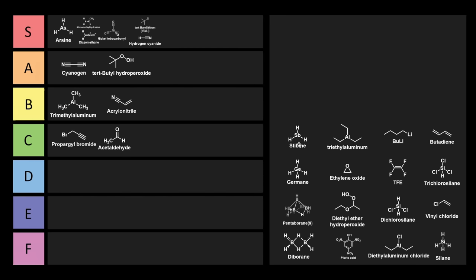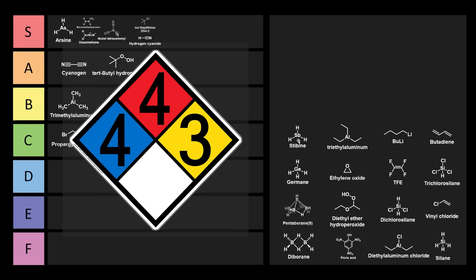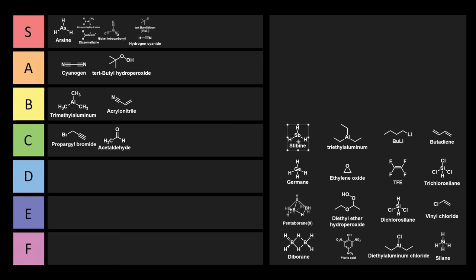This odd-looking chemical is called stibine. It's a derivative of antimony, and since it's a pnictogen, which is the same row that nitrogen, phosphorus, and arsenic are in, it behaves similar to arsine. Likewise, it binds to the hemoglobin of red blood cells, causing the body to destroy it, making it extremely toxic, with an LC50 of 100 ppm in mice. It's also highly flammable, giving it a rating of 443. This is another chemical that belongs right into S-tier, which is appropriate, because it starts with an S.